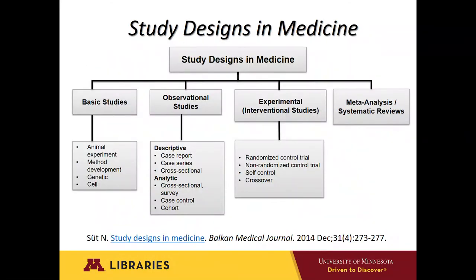This tree diagram lays out the four basic study design groups in healthcare and their relationships. They are basic studies — the animal and lab studies; observational studies, which include both descriptive and analytic designs; experimental studies, into which randomized control trials fall; and finally meta-analysis and systematic reviews.